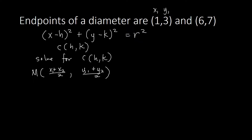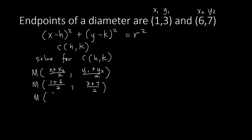For Example 1, the endpoints of the diameter are (1, 3) and (6, 7). We label these as x₁, y₁, x₂, y₂ and plug into the midpoint formula. So we have: x₁ plus x₂ over 2 gives us 1 plus 6 over 2, which is 7 over 2. And y₁ plus y₂ over 2 gives us 3 plus 7 over 2, which is 10 over 2.